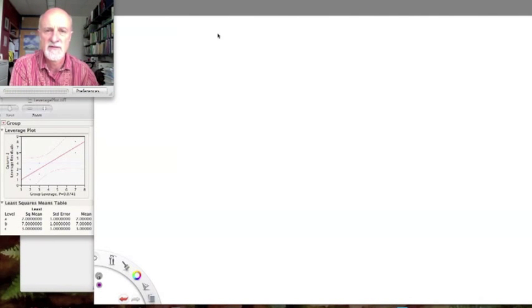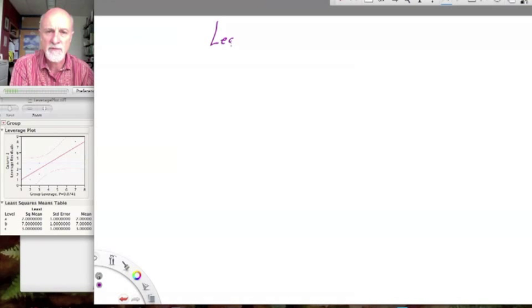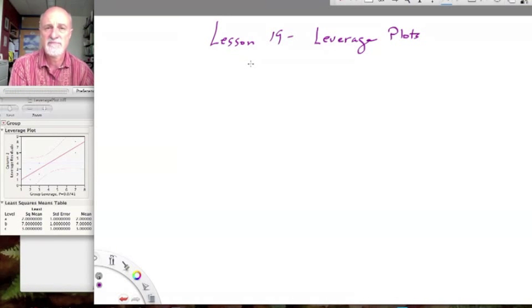Leverage plots. So if you have used SAS JMP, you will quickly see that the output shows a lot of interesting information, some of which is like Greek if you don't know what it's all about. But these leverage plots show up when you do analysis of variance.